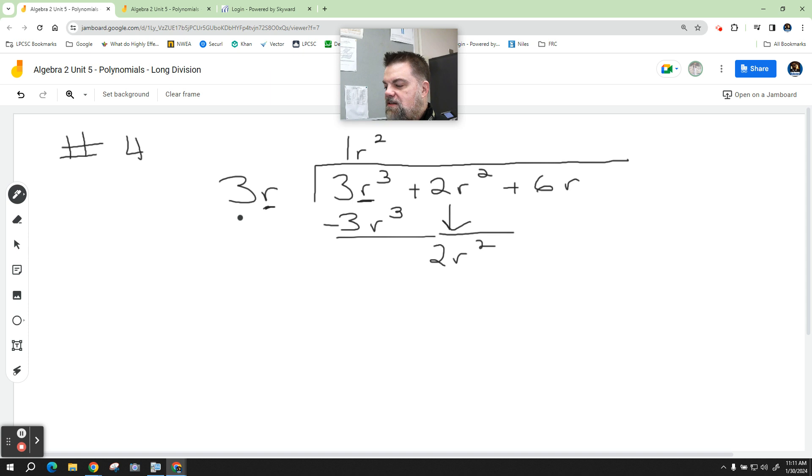What do I multiply 3 by to get 2? No, it's not 0.5. I put this in here on purpose. I have to drop this down. This is actually the remainder. You can have two terms in the remainder.